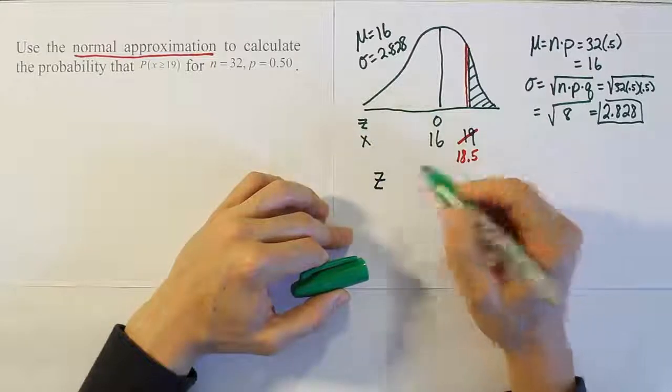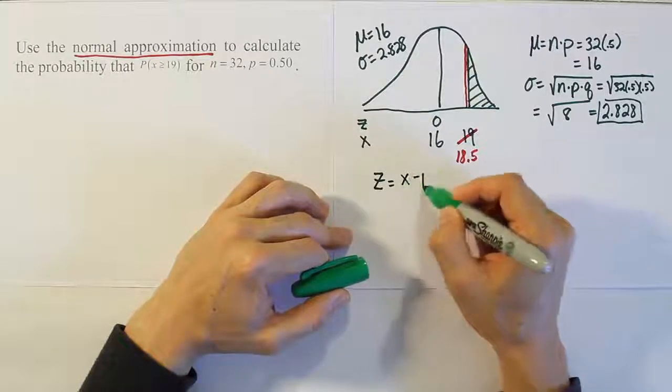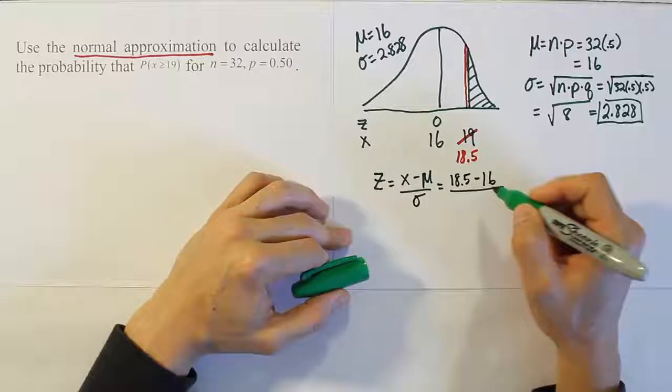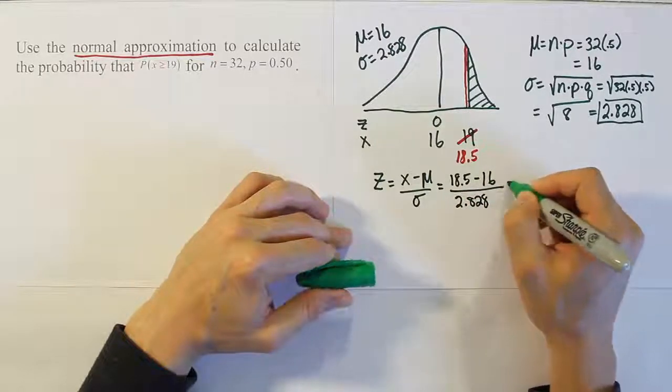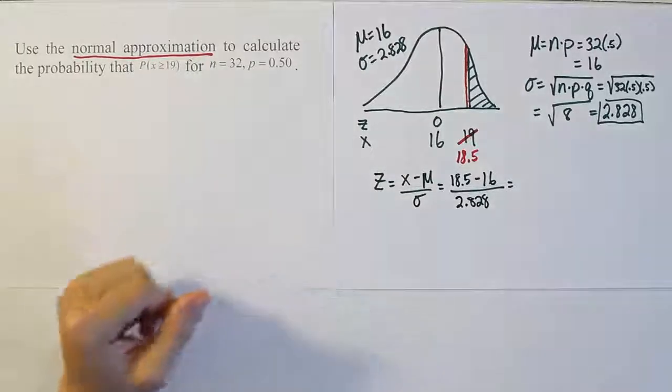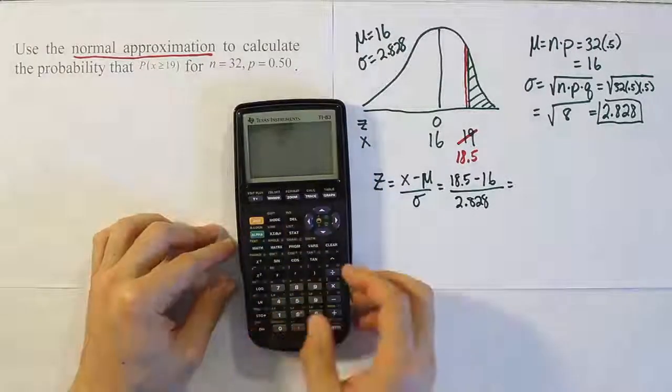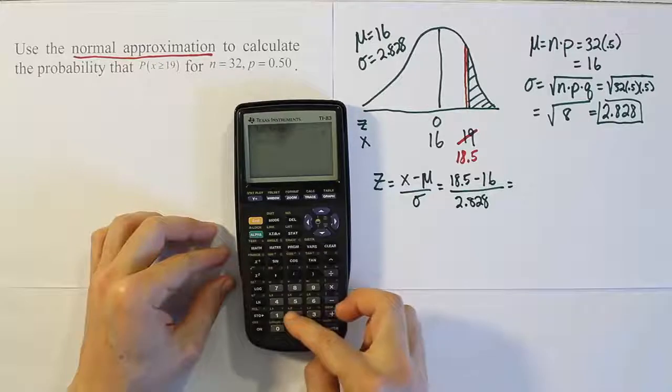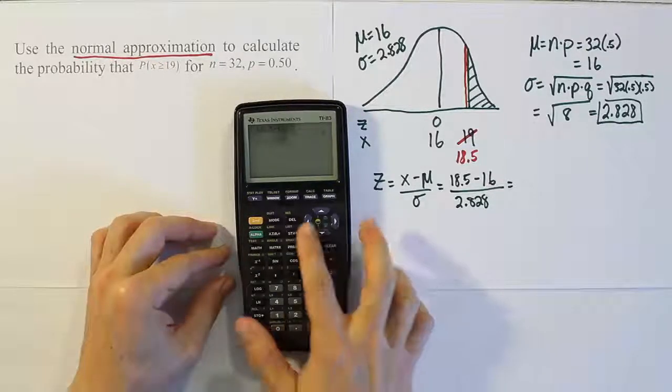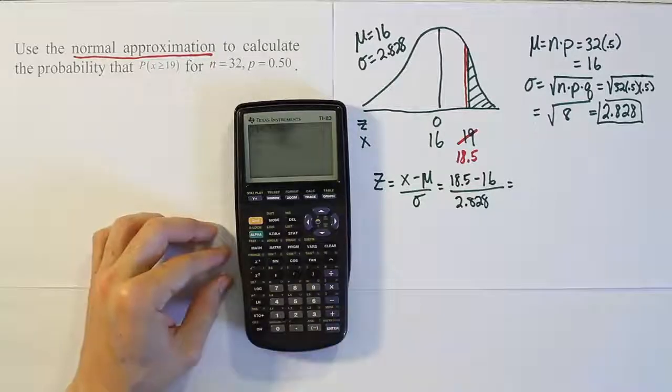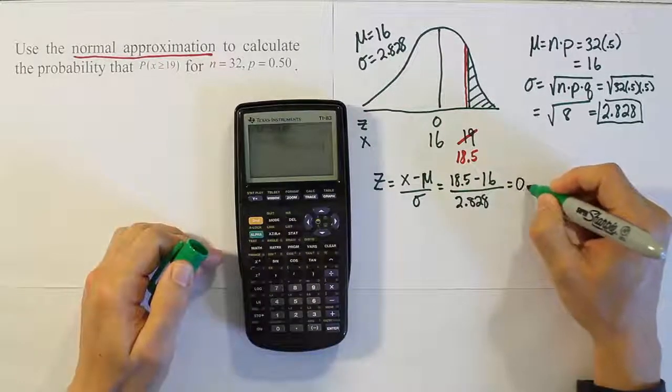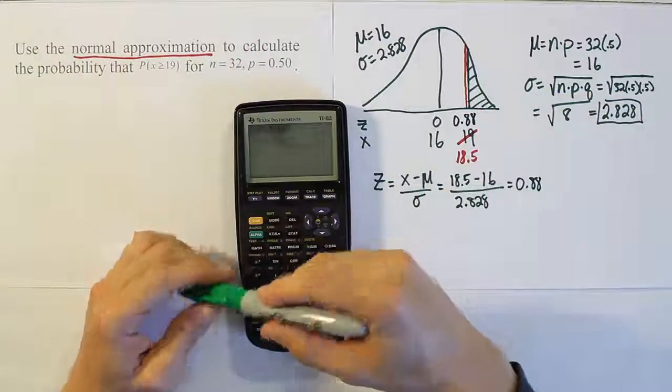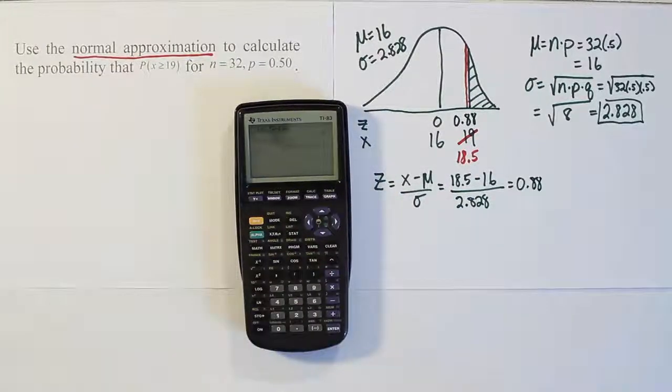Let's convert 18.5 into a z-score. We'll have x minus the mean over sigma. That's going to be 18.5 minus 16 divided by 2.828. When we do that calculation, 2.5 divided by 2.828, we get 0.88 if you round off to two decimal places, which we are required to do for the z-chart.